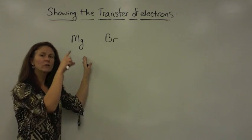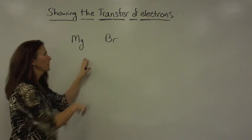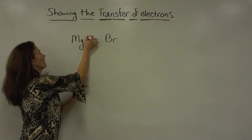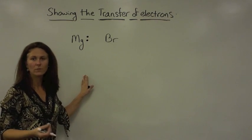Looking on the periodic chart, make sure you look at the group number for magnesium. You'll notice it's in group 2A, so it has two valence electrons, which we're going to represent with dots.